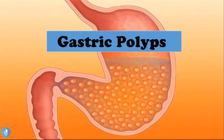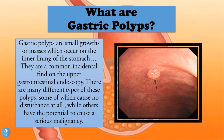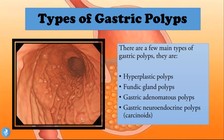Welcome to How to Gastro. In today's video we will be talking about gastric polyps. Gastric polyps are small growths or masses which occur on the inner lining of the stomach. They are a common incidental find on upper GI endoscopy and there are many different types — some which cause no disturbance at all, while others have the potential to cause a serious malignancy.